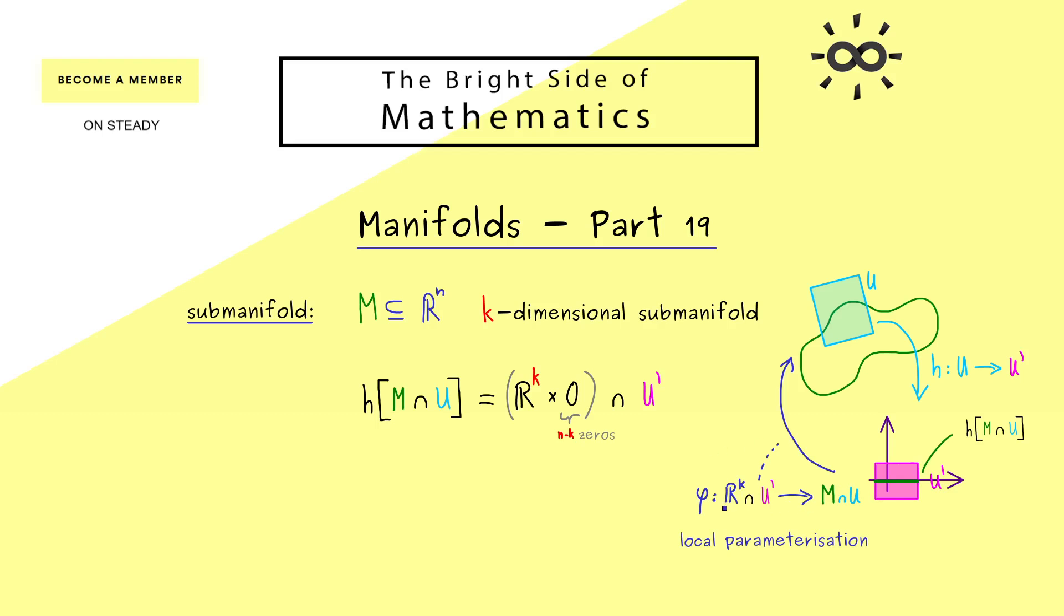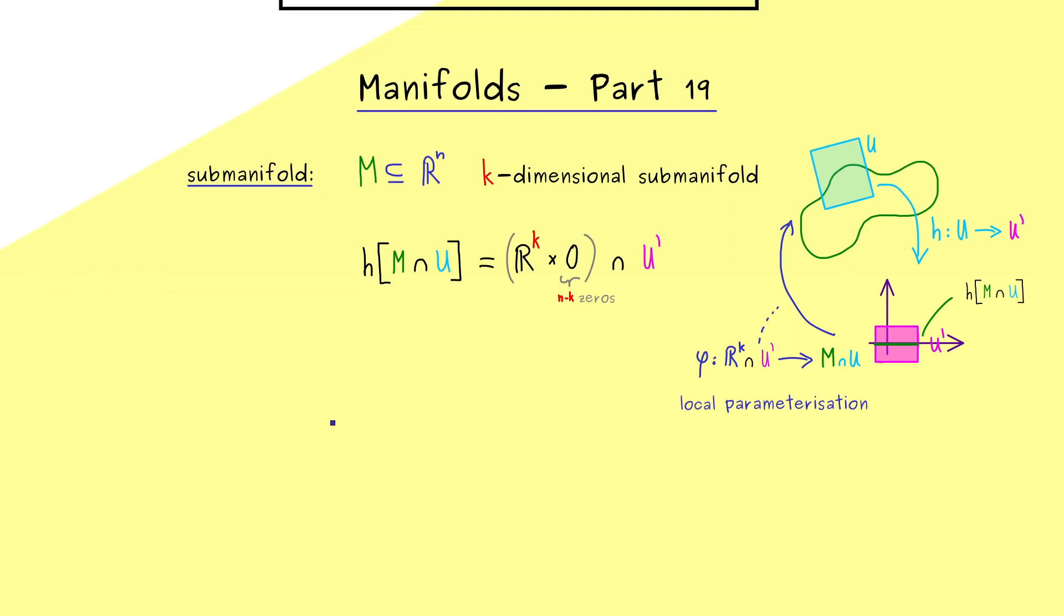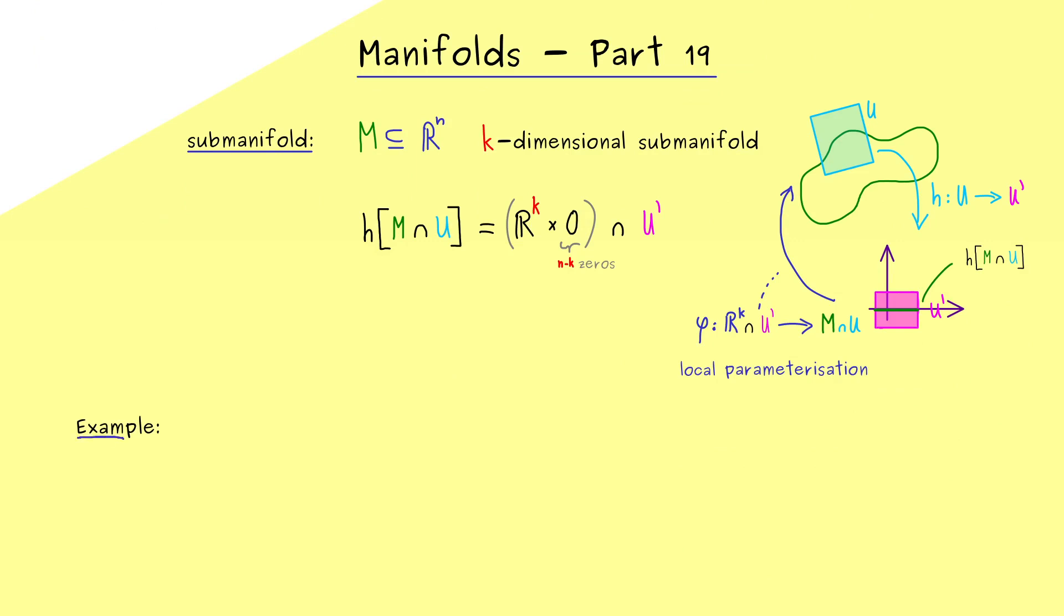The crucial thing is that we start with a k-dimensional space on the left and land in the n-dimensional space but describe the manifold inside it. So maybe let's immediately look at a very simple example here. In fact, let's keep it simple and take a one-dimensional example again.